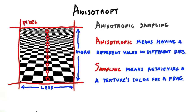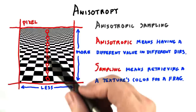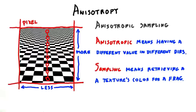What anisotropic sampling does is take extra samples along the axis where texels are more frequent and blends these together. These extra samples generally give a better result, not blurring out as quickly as the mipmap does.